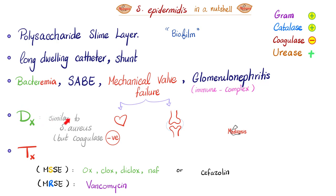How do we diagnose it? Similar to Staph aureus — watch video number six. The key difference is that Staph epidermidis is coagulase-negative, so the tube coagulase test will turn negative — no clot formation. For treatment: if sensitive, give oxacillin, cloxacillin, dicloxacillin, nafcillin, or cefazolin. If resistant, give vancomycin.